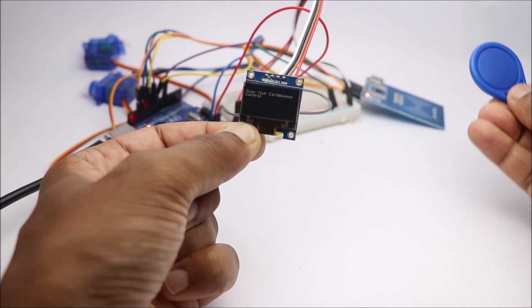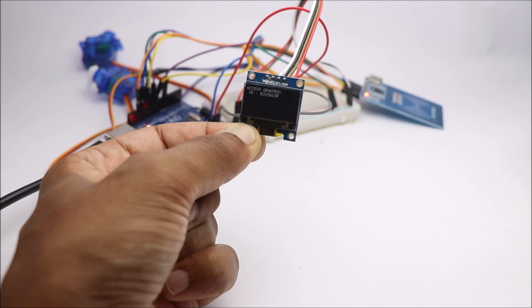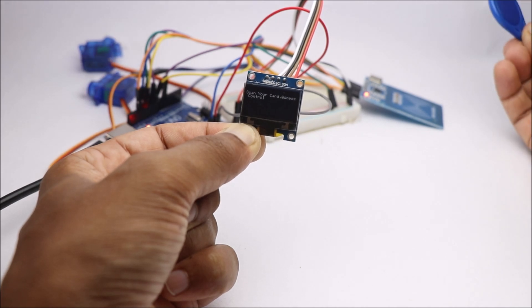When I test the circuit, you can see the UID of my tag in the OLED display and the servo moves only with this registered tag.